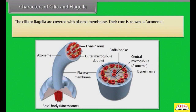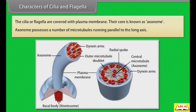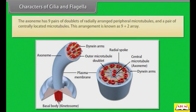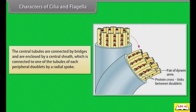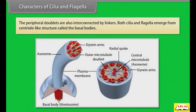Their core is known as the axoneme. The axoneme possesses a number of microtubules running parallel to the long axis. The axoneme has nine pairs of doublets of radially arranged peripheral microtubules and a pair of centrally located microtubules — this arrangement is known as the 9+2 array. The central tubules are connected by bridges and enclosed by a central sheath, which is connected to one of the tubules of each peripheral doublet by a radial spoke. The peripheral doublets are also interconnected by linkers. Both cilia and flagella emerge from centriole-like structures called the basal bodies.